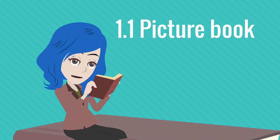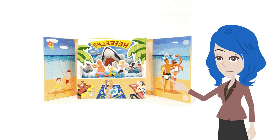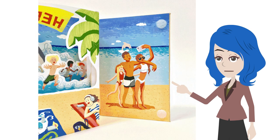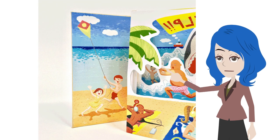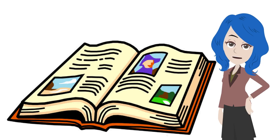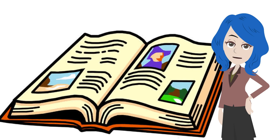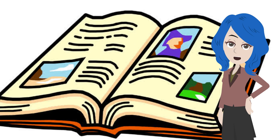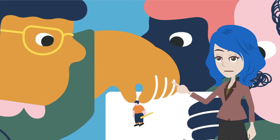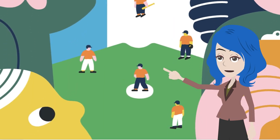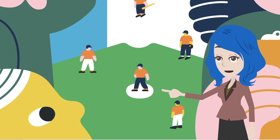1.1 Picture Book. A picture book is the simplest example of integrating literature and visual art. The phrase 'picture book' is commonly used to describe a book, most often written for children, in which the content is conveyed through the use of words and pictures in combination, or through pictures alone. A picture book differs from an illustrated book in that the pictures it contains form an essential part of the structure of the book.